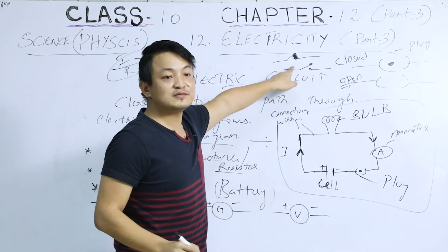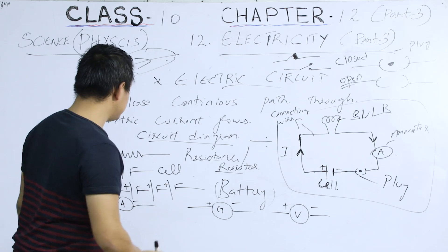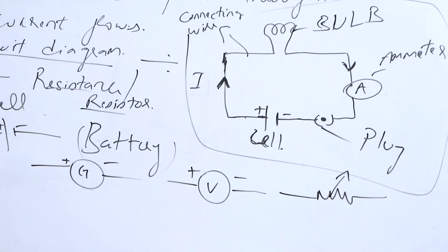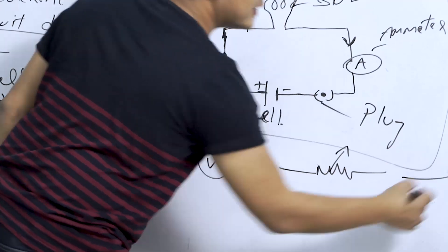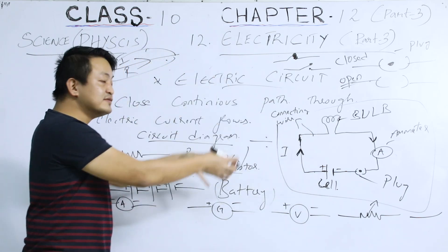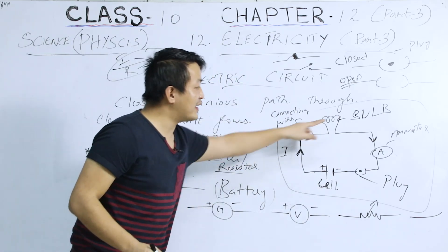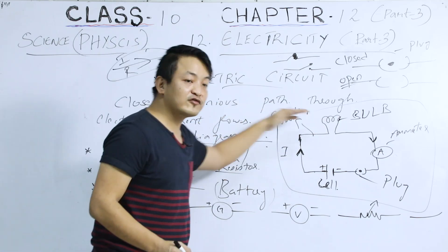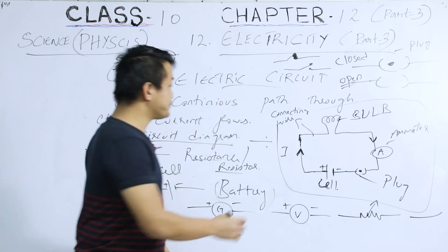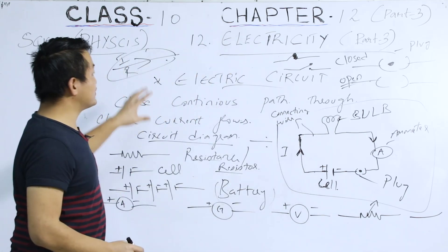A closed plug can also be shown in an alternative way, and an open plug can be shown like this as well. This symbol is the rheostat, a straight line represents a connecting wire, and this symbol is the bulb. These are the symbols used in circuit diagrams. So an electric circuit is a closed continuous path where current flows, and a circuit diagram is a schematic diagram showing the relative position and connection of all these symbols.